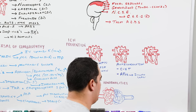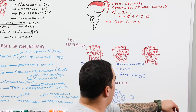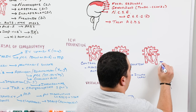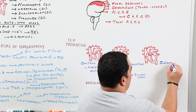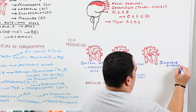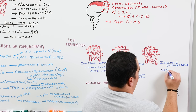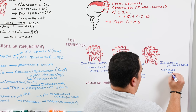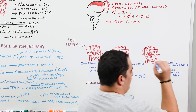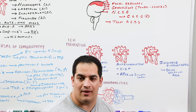For cerebral venous sinus thrombosis, anticoagulation — with unfractionated heparin, low molecular weight heparin, or DOACs — is required even if the patient has a bleed, to break down the clot and prevent new clot formation. For infective endocarditis, start broad-spectrum antibiotics such as vancomycin and cefepime, then adjust based on blood culture results.